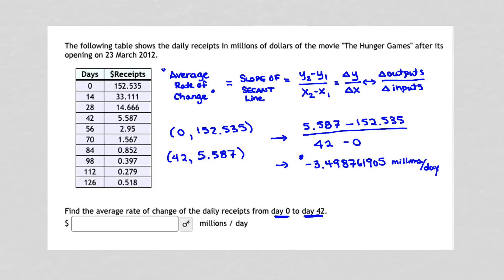That's our average rate of change. Now in my open math, we want to make sure that we have enough decimals put into our answer for it to accept it correctly. So make sure you go at least six or seven decimals out.